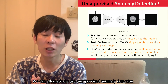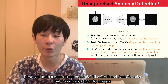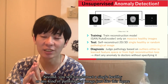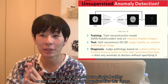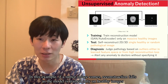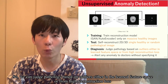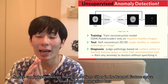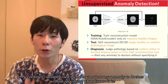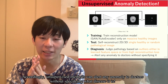We can alternatively use unsupervised anomaly detection. First, you train a reconstruction model like a GAN and autoencoder only on massive healthy images. Second, you self-reconstruct a single healthy or any kind of pathological image, just like this figure. If a tumor image comes in, reconstruction fails as the model is trained only on healthy images. So we can judge pathology based on outliers either in the learned feature space or from high reconstruction loss. Accordingly, unsupervised methods can alert doctors to any anomaly without specifying what disease it is.